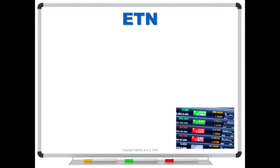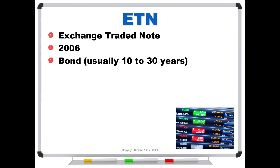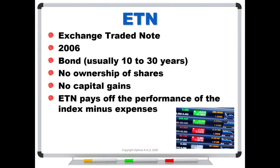What about an ETN? It is an exchange traded note — a fairly recent development, coming out in 2006. It's called a note because that's what it is: actually a bond, usually issued for 10 to 30 years, with a maturity date — think of it like an expiration date, which ETFs do not have. The person that issues an ETN is actually borrowing money, and there is absolutely no ownership of shares. Just like an ETF, there are no capital gains. Instead, the ETN pays off the performance of the index minus expenses. So it might track a commodity or an index, and at the end of, say, a 10-year period, if it's up 50%, 60%, or 70%, that's what it pays off. There's no ownership of shares and no capital gains — it's simply promising to pay the performance of some underlying.